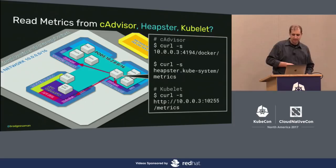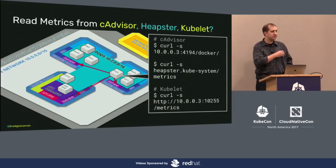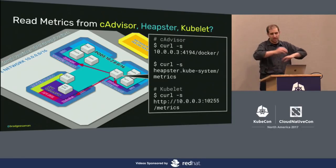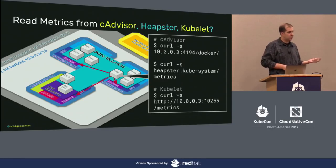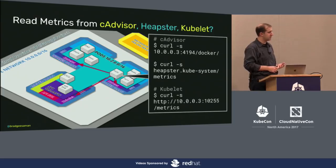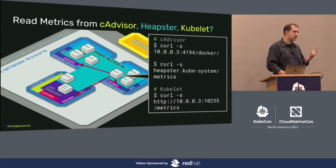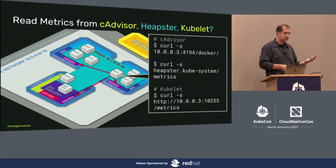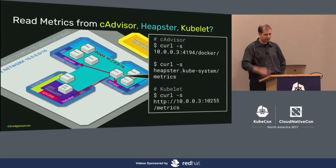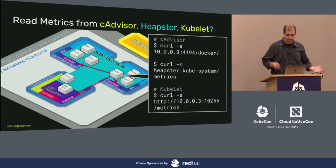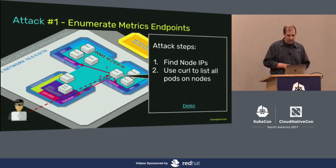Whenever you break into that first system doing a penetration test, the first thing you do is say: what does the world look like? In a distributed system where everything's based on APIs, that enumeration is just a couple of curl commands. If I hit cAdvisor, Heapster, kubelet, Prometheus node exporter, kube-state-metrics — any of those — it's just: tell me about yourself. And they'll tell you everything: pod names, what they're running, where they're running, pod hashes. Everything is right there.